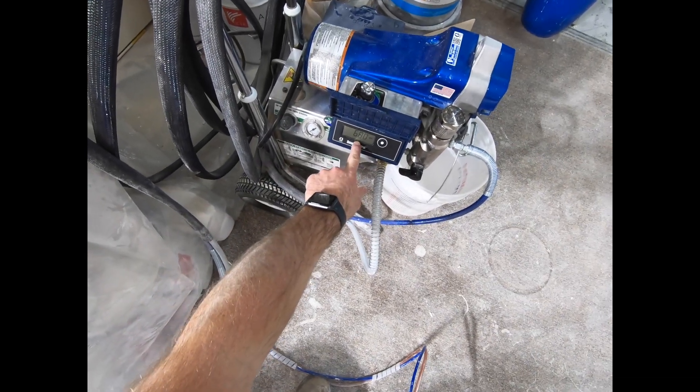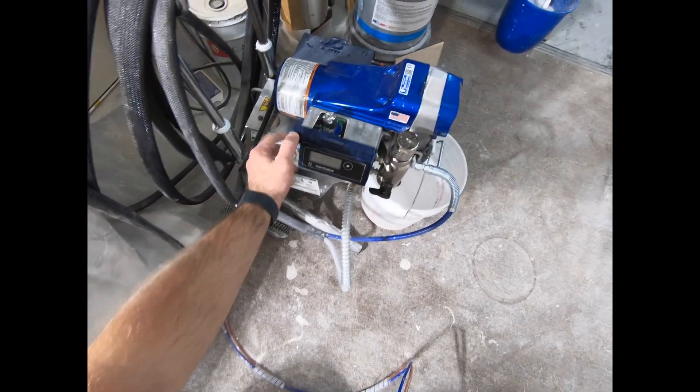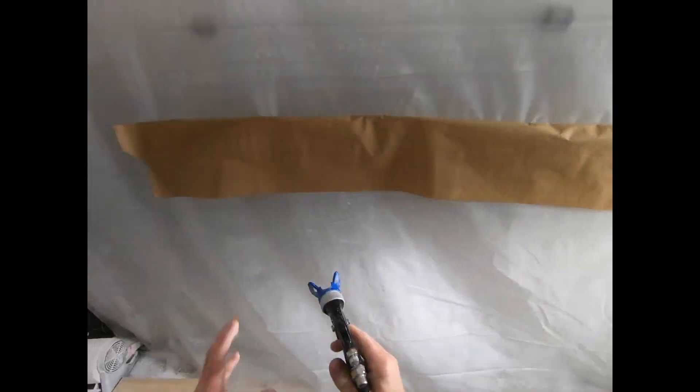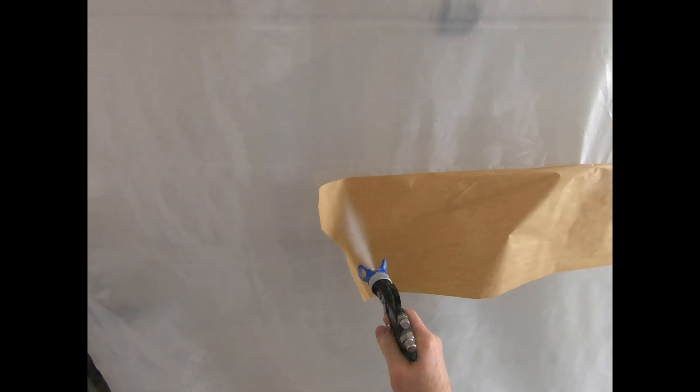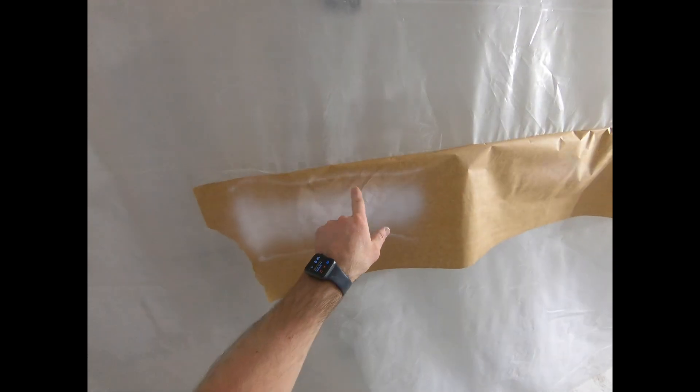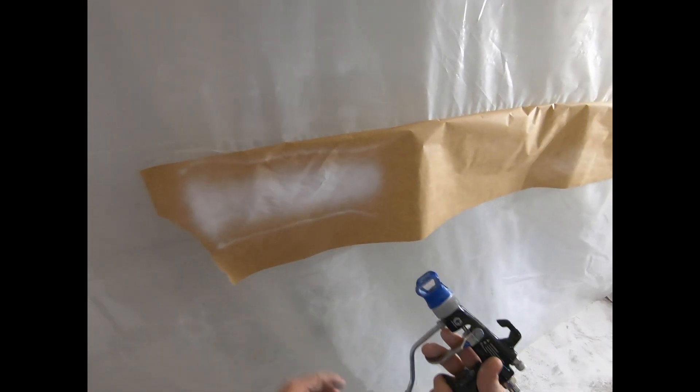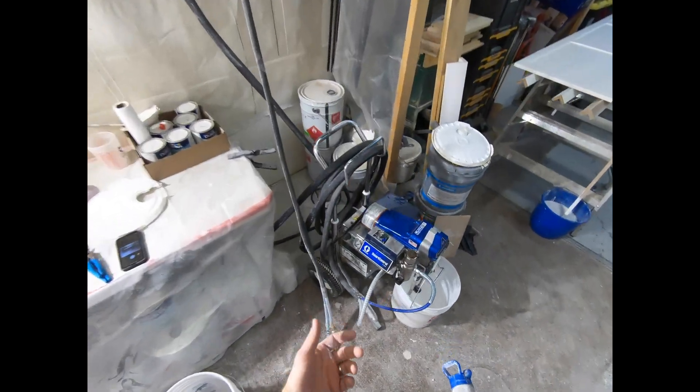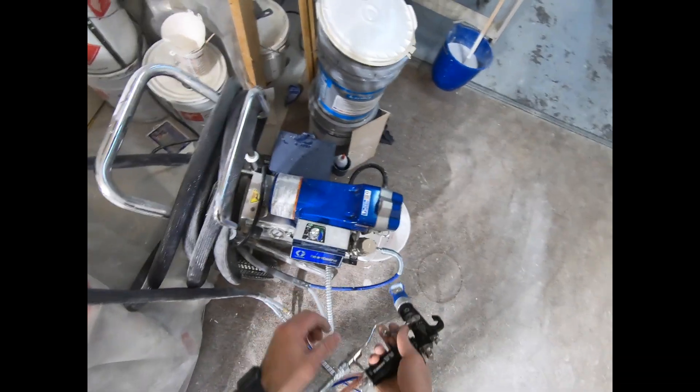I have my fluid pressure set up pretty low. You want to start low and have tails on either side of the spray pattern. See how it has tails on either side here? You want to start there, then add air to help compensate it.